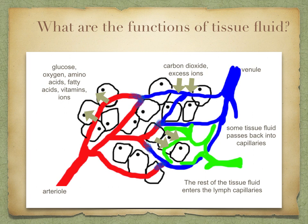Waste products, such as carbon dioxide, diffuse in the opposite direction. Here in this diagram, you can see how at the arterial end of the capillary bed, glucose, oxygen, amino acids, fatty acids, vitamins, and ions are all diffusing out of the capillary into the tissue fluid.